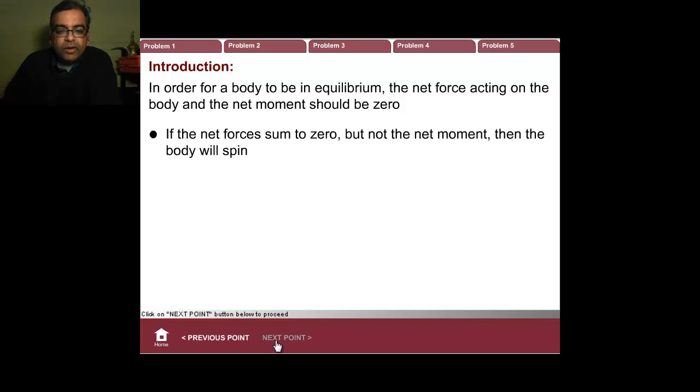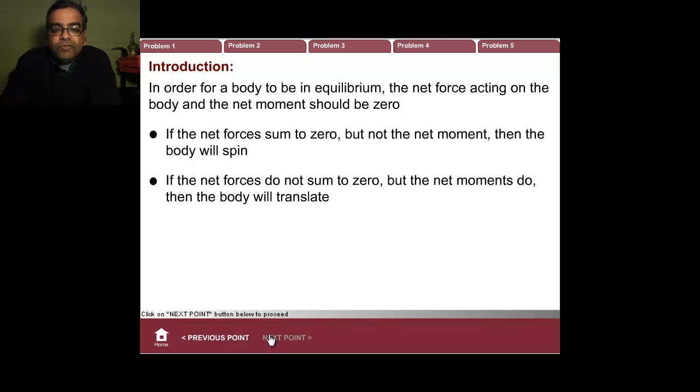What happens if the net force is zero but the net moment is not zero? The body will spin. Conversely, if the net force is not zero but the net moment is zero, then the body will translate. If both are not zero, the body will translate and rotate.